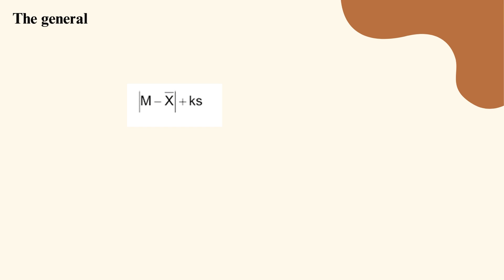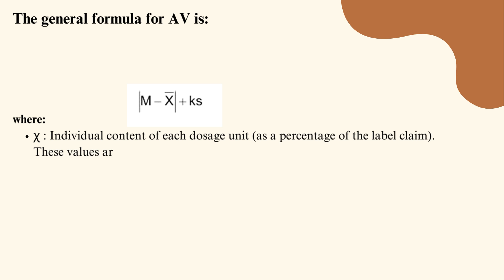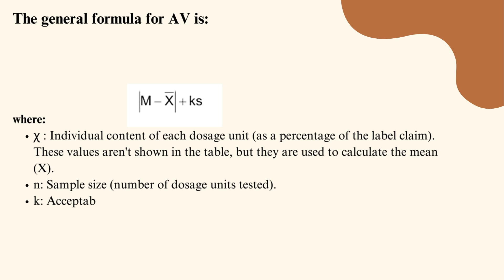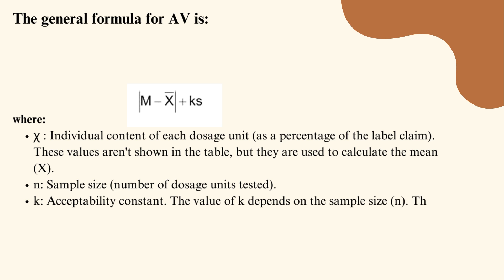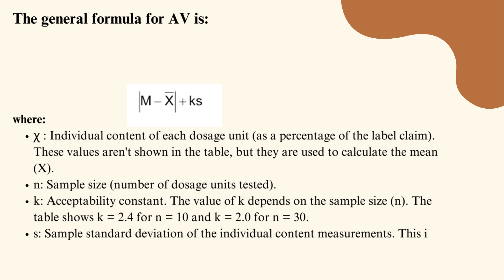How to calculate it? The general formula for AV is: when M equals X, AV equals KS. Where X is the individual content of each dosage unit — these values are used to calculate the mean. N is the sample size. K is the acceptability constant — its value depends on the sample size N. The table shows K equals 2.4 for N equals 10, and K equals 2.0 for N equals 30. S is the sample standard deviation of the individual content measurements.